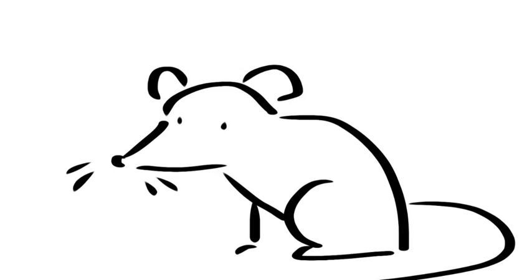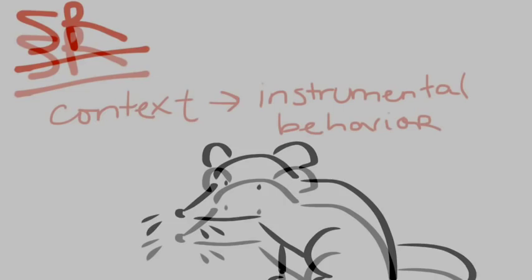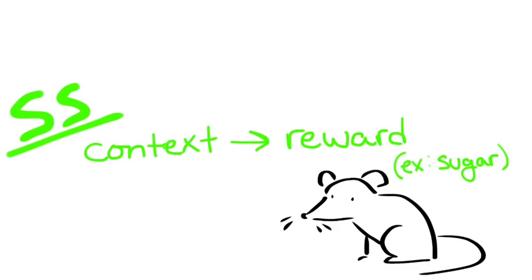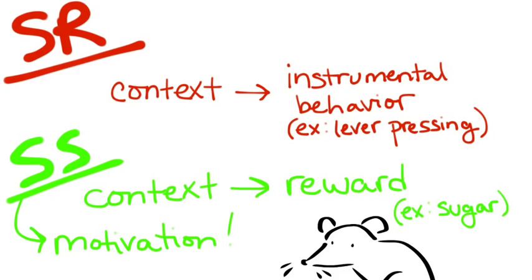According to the two-process theory, behavior is driven by two forces. The SR association between the context and the instrumental behavior, such as lever pressing, and the SS association between the context and the reward, something like sugar. We'll call this SS association the motivational force.